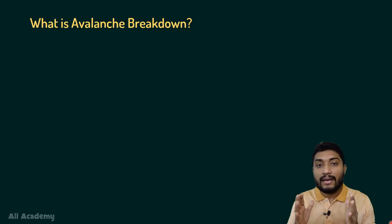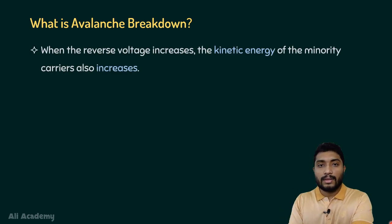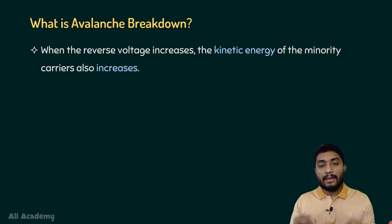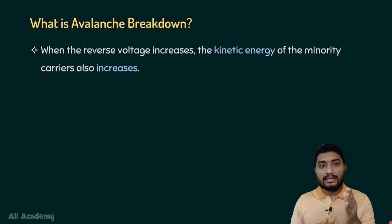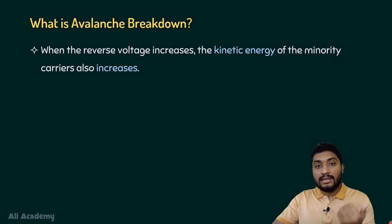So, what is actually avalanche breakdown? When we increase the reverse voltage across a PN junction diode, when the PN junction diode is reverse biased, there will be a small amount of current flowing through the junction, which is known as the reverse saturation current. This reverse saturation current flows due to minority carriers. So, when we increase the reverse voltage, the kinetic energy of these minority charge carriers will increase.